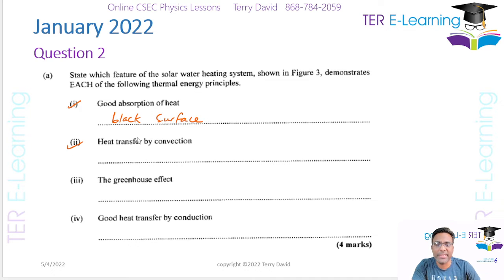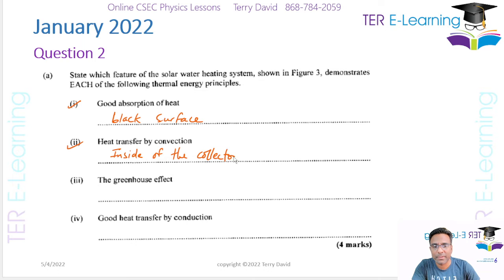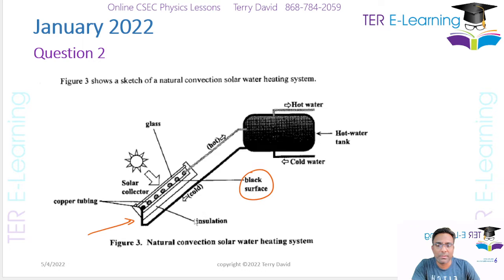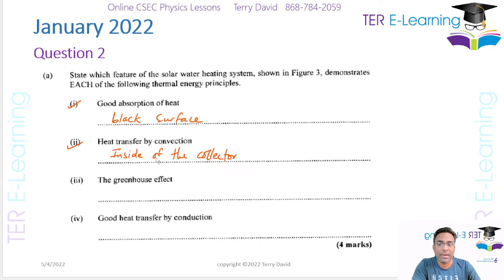The second part: heat transfer by convection. That is inside the collector. Sunlight passes through the glass plate and that heat gets trapped on the inside, warming up the air inside the collector, and the air starts to circulate — that's convection.